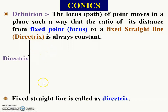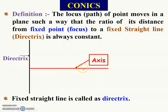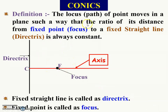This fixed straight line is known as a directrix. This is the axis, and the intersection of the directrix and axis — let us call it C. There is a point on the axis known as the focus or fixed point F. Now, let us see: there is a point P located here, and we want the ratio of point P from the focus to the fixed straight line.